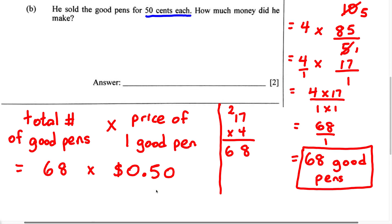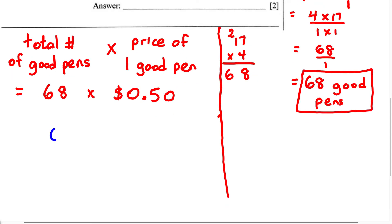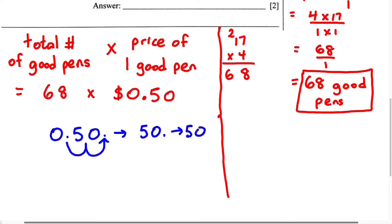Now we're multiplying a whole number by a decimal number. We're going to convert the decimal number into a whole number, multiply, and then put the decimal point back in our answer. We have 50 cents, written as 0.50. We're going to move the decimal point two places to the right, ending up with 50. We drop the decimal point and write it as 50. We must note that we moved it two decimal places — in our answer, we'll need to move the decimal point back two places to the left.